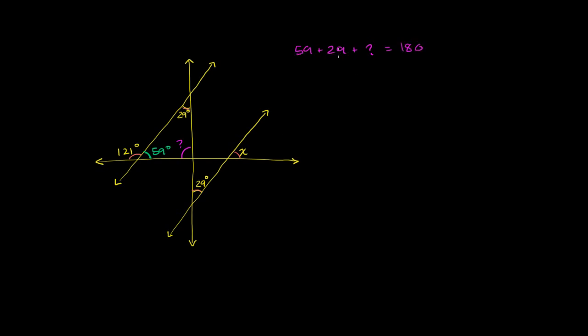And if we subtract the 59 and the 29 from both sides, we get question mark is equal to 180 minus 59 minus 29 degrees. So that is going to be 180 minus 59 minus 29. Let's see. 180 minus 59, we already know, is 121.